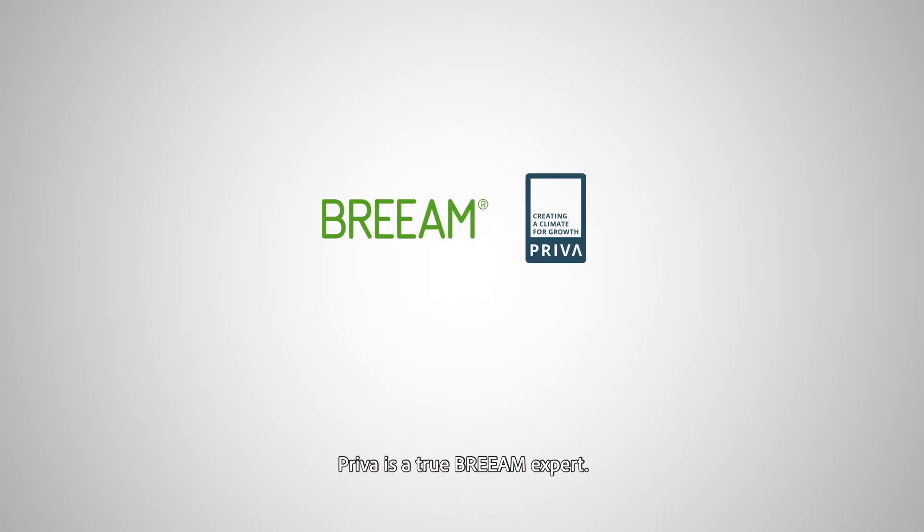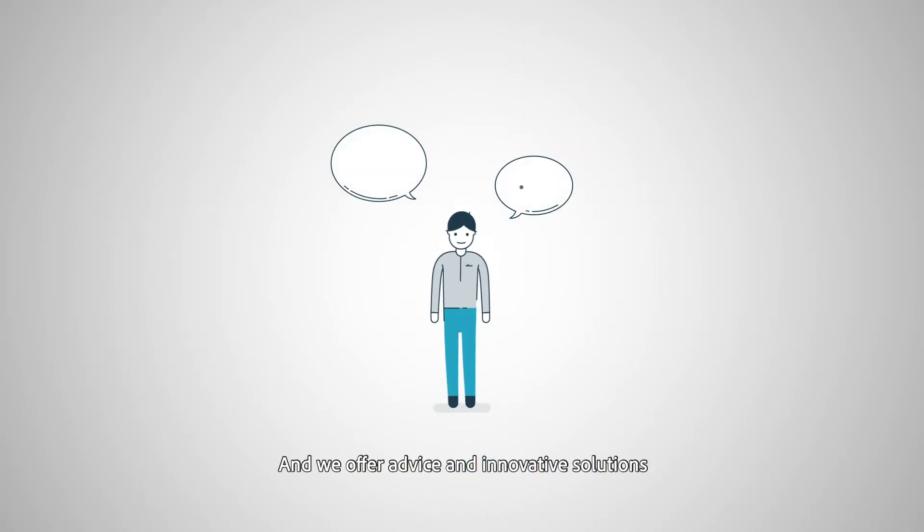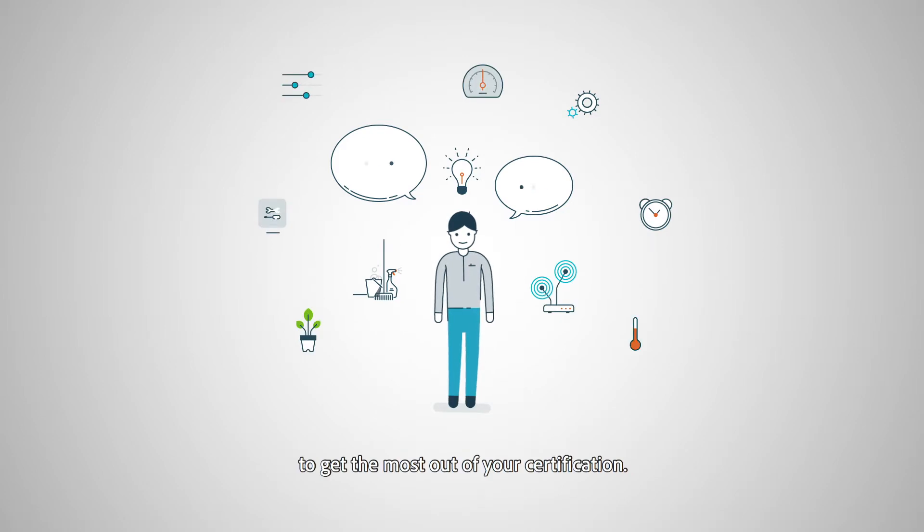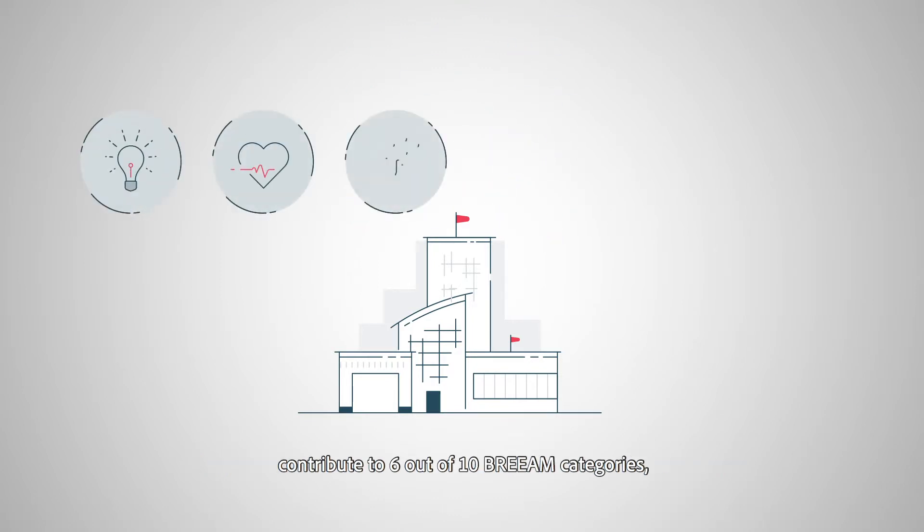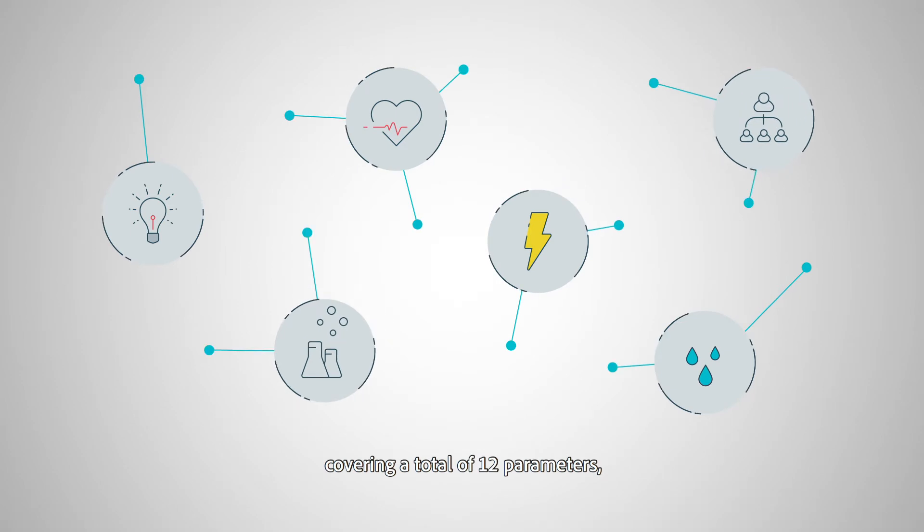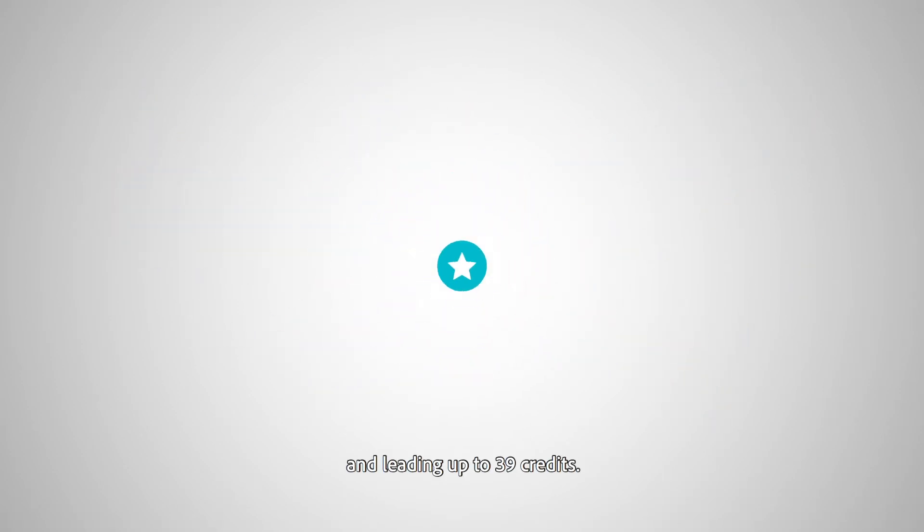Priva is a true BREEAM expert, and we offer advice and innovative solutions to get the most out of your certification. Our tools for sustainable climate control and process management contribute to 6 out of 10 BREEAM categories, covering a total of 12 parameters and leading up to 39 credits.